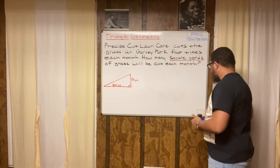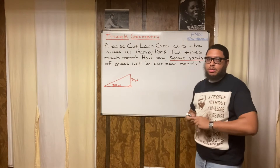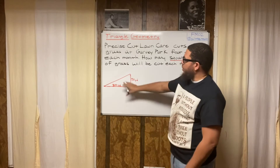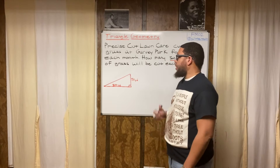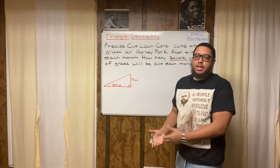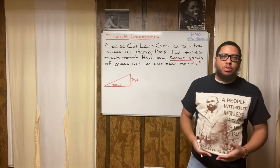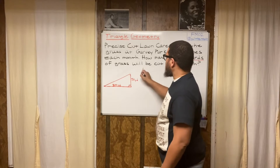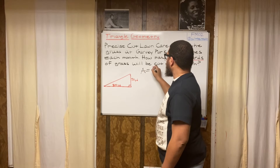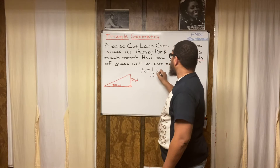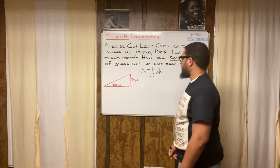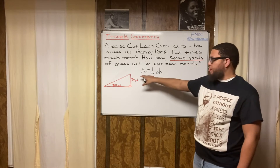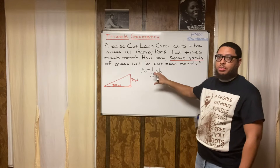Now that I know we're dealing with area, that tells me what type of formula I need. This is a triangle and I need the area, so I'm thinking: what is the formula for the area of a triangle? The formula is: Area equals one-half times the base times the height. I'm looking for A — I'm trying to figure that out, and I can use this formula to do that.